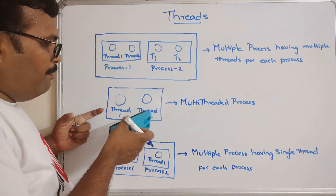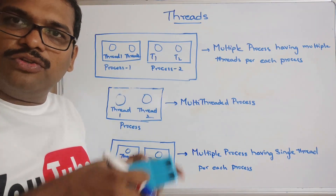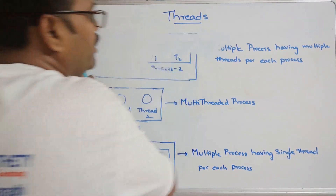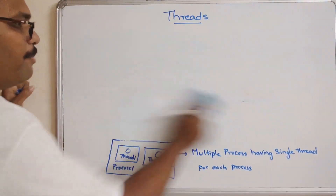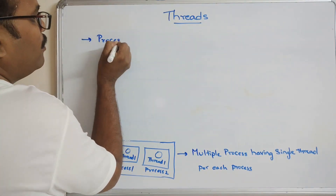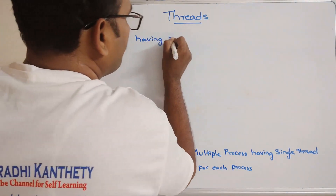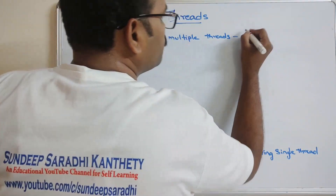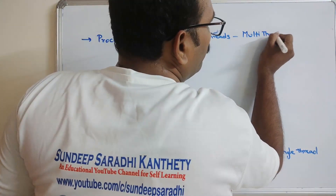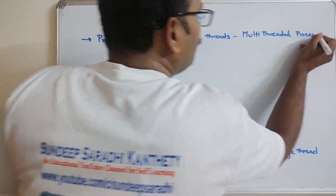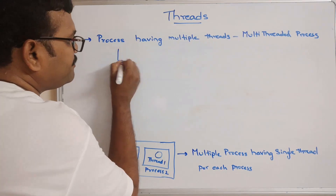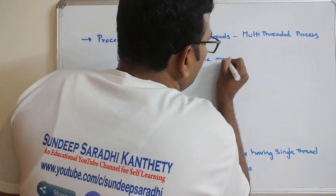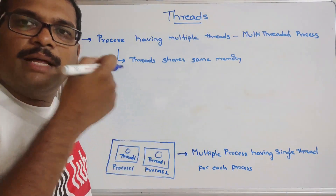By creating multiple threads for a single process, these threads will share the common memory and data of that particular process. If a process is having multiple threads — what we call a multi-threaded process — these threads share the same memory because all the threads belong to the same process. So the memory and data will be shared.